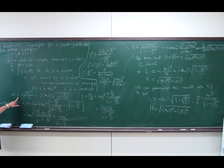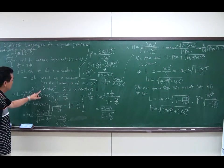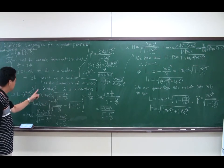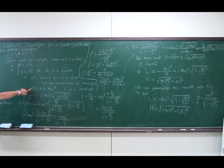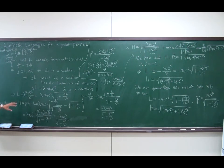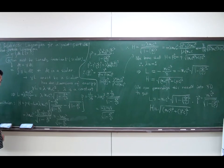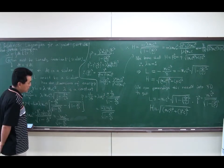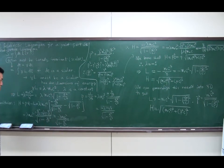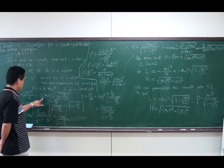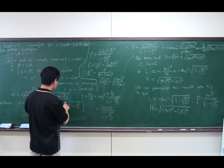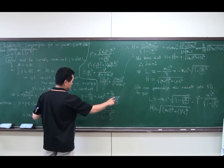The Lagrangian L equals lambda·m₀c²/gamma. Substituting the expression for gamma, the square root appears in the numerator instead of the denominator, giving L = lambda·m₀c²·sqrt(1 − v²/c²). Let us find the Hamiltonian for the one-dimensional case for simplicity. The Hamiltonian is the conjugate momentum times velocity minus the Lagrangian. The conjugate momentum is obtained by partial differentiation of L with respect to velocity. Taking the derivative of the square root, we get the factor from the chain rule.